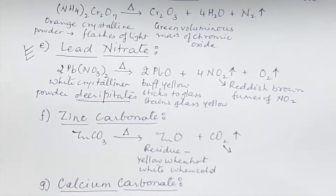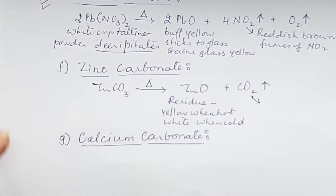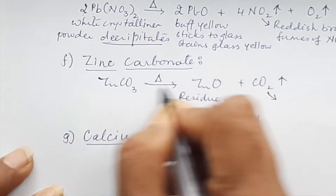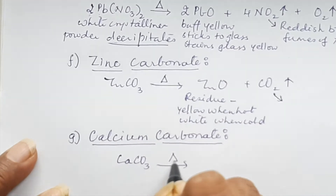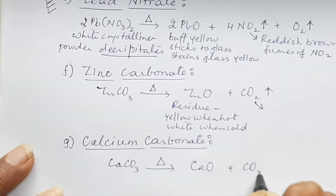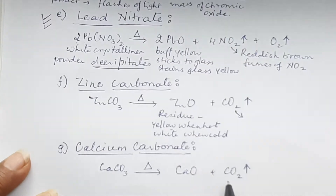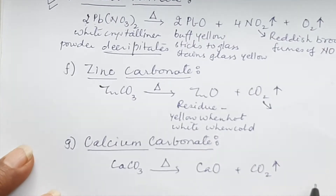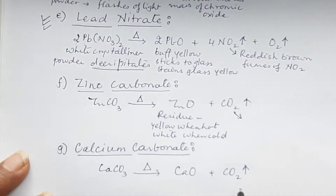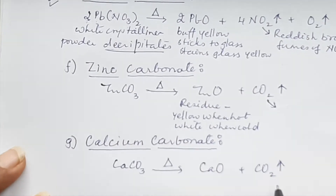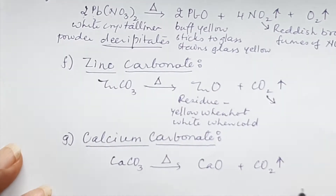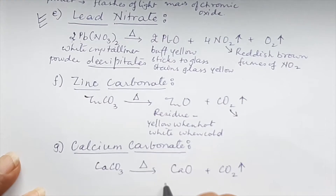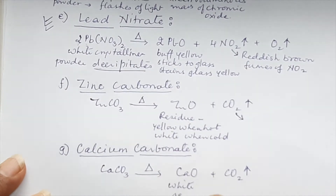The last one is calcium carbonate: CaCO₃ on heating gives CaO + CO₂. CO₂ is colorless odorless gas which turns lime water milky and has no effect on acidified potassium dichromate solution — or potassium permanganate solution, which also has no effect. CaO is a white residue.